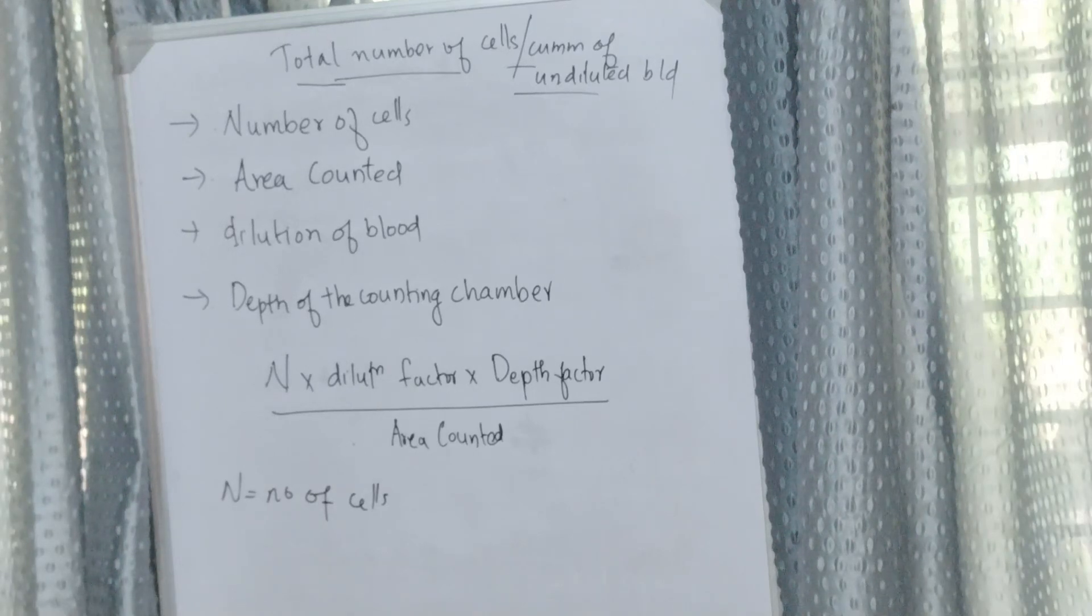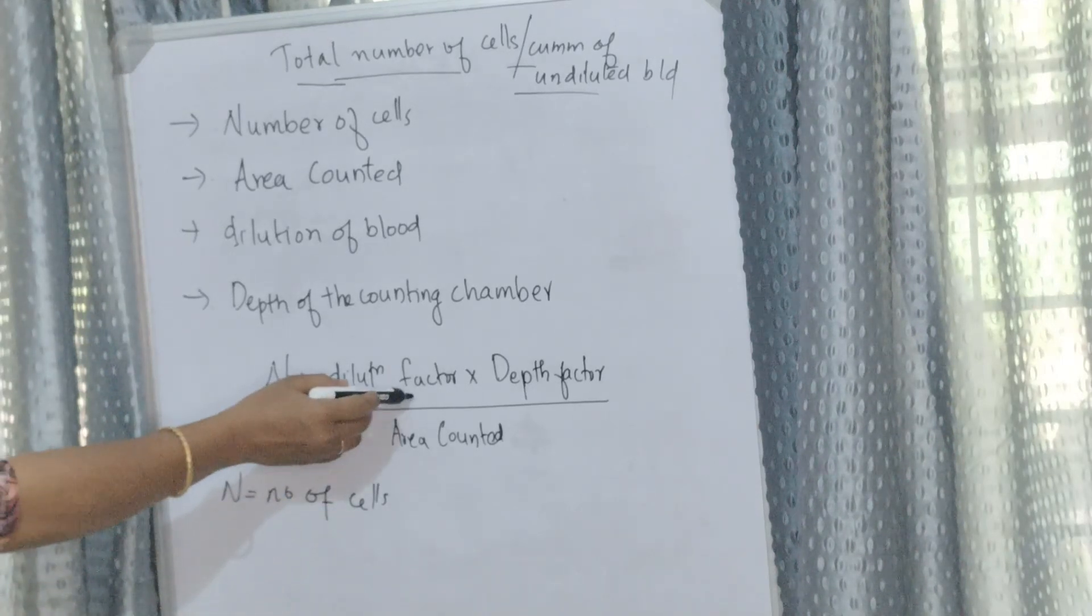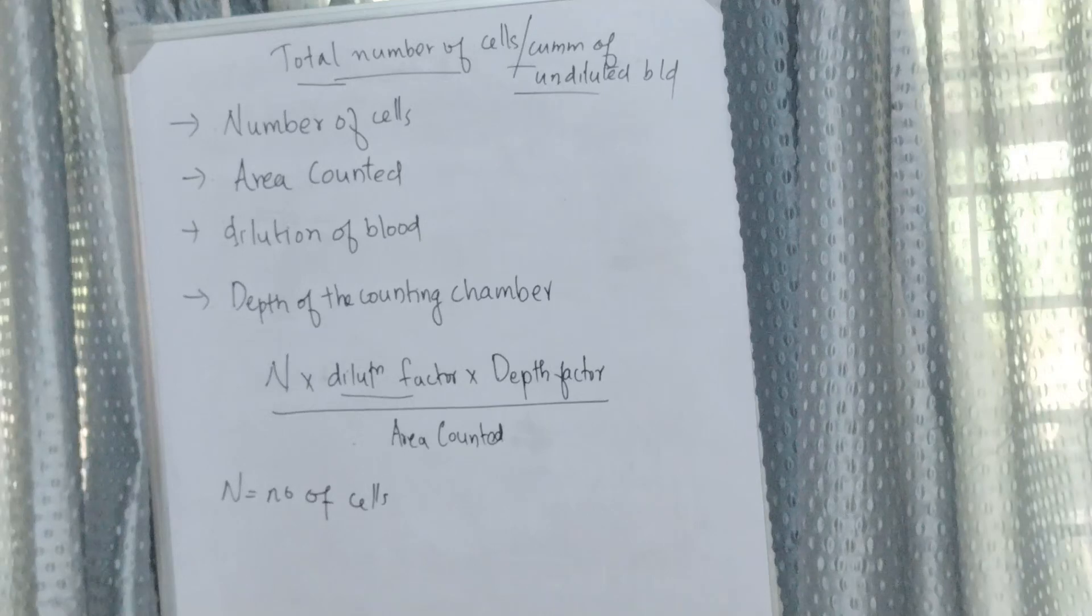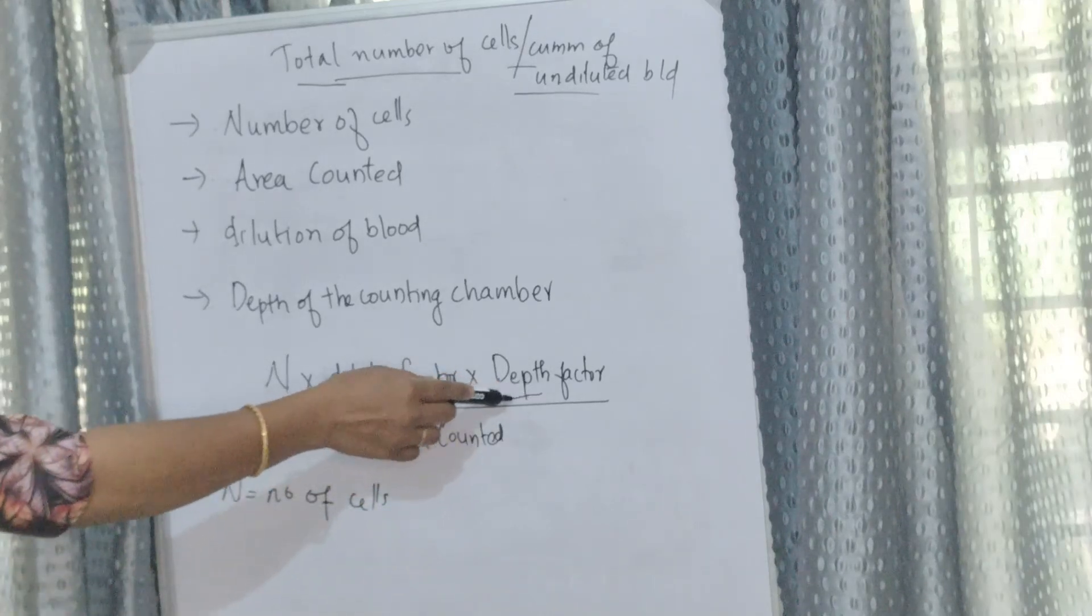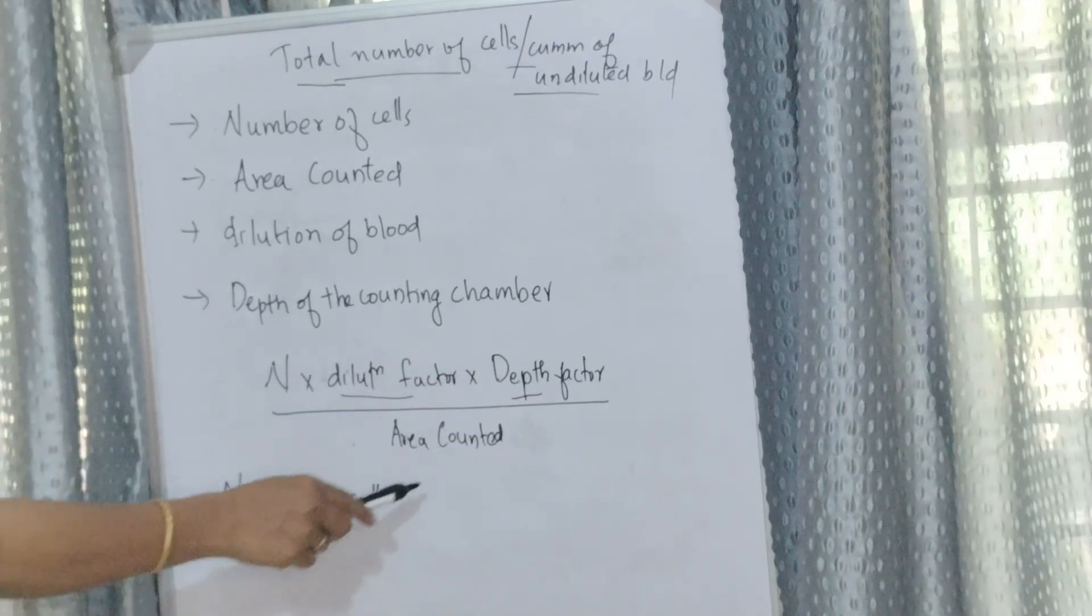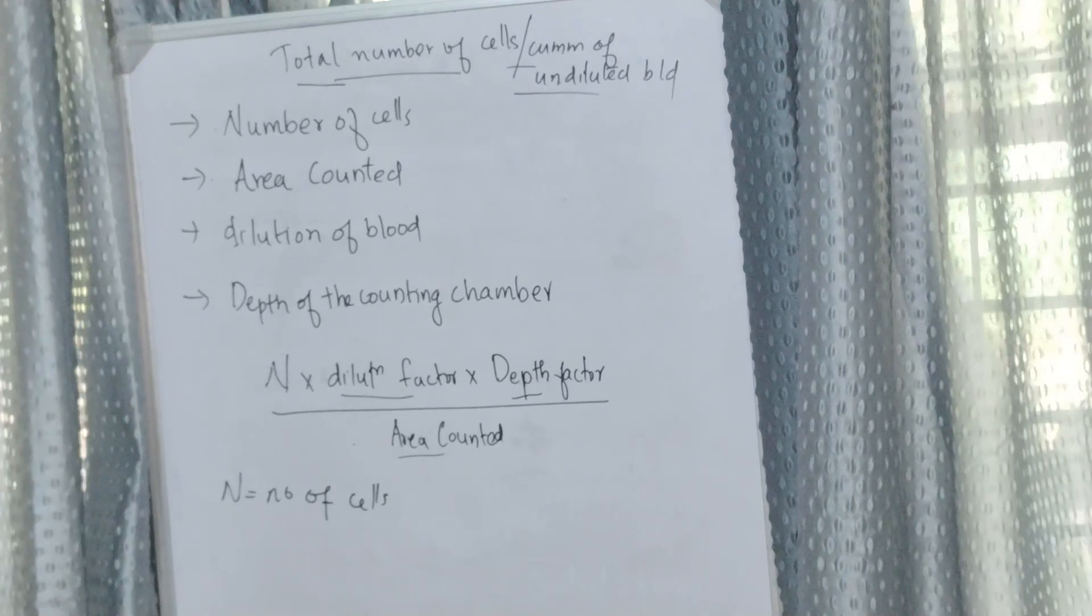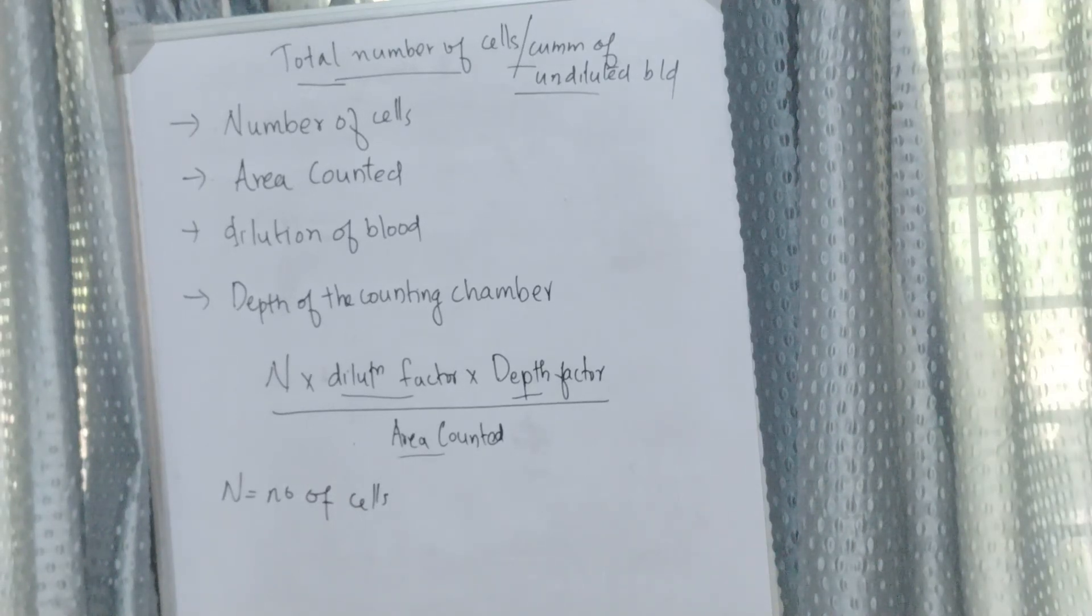N times dilution factor times depth factor divided by area counted. Dilution factor is 1 in 100 for RBC and 1 in 20 for WBC. Depth factor is 0.1 and area counted depends upon the cell counted. We will discuss it in detail.